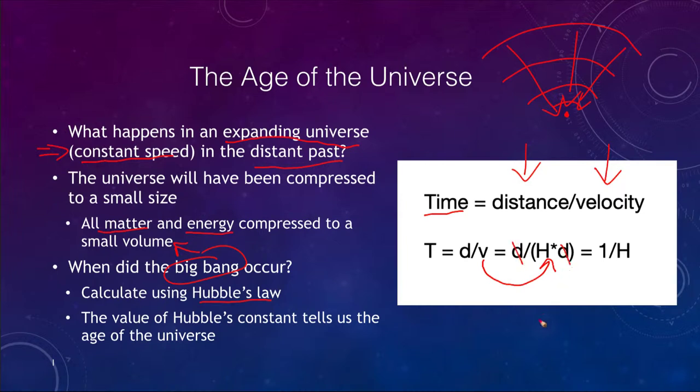Distance divided by velocity, the distances cancel and that leaves us that the amount of time is just equal to 1 divided by Hubble's constant. So if you take 1 and divide it by Hubble's constant, it gives you the age of the universe.